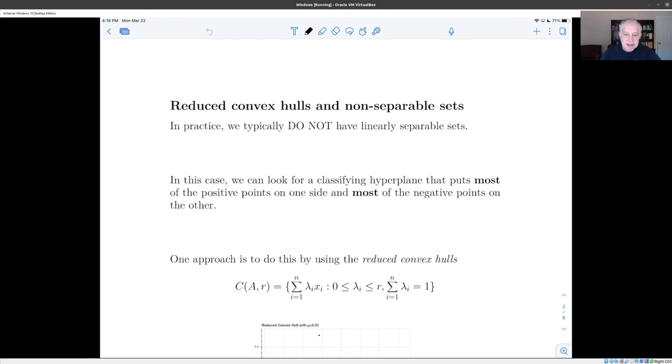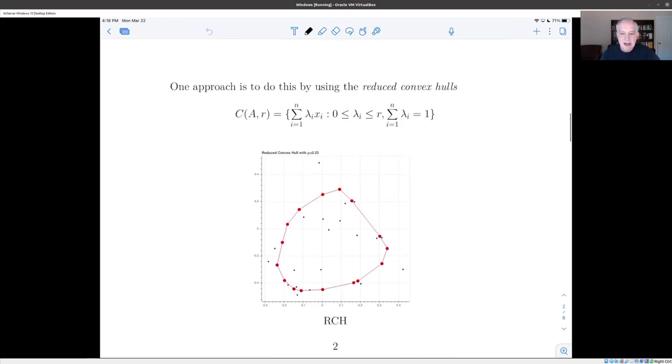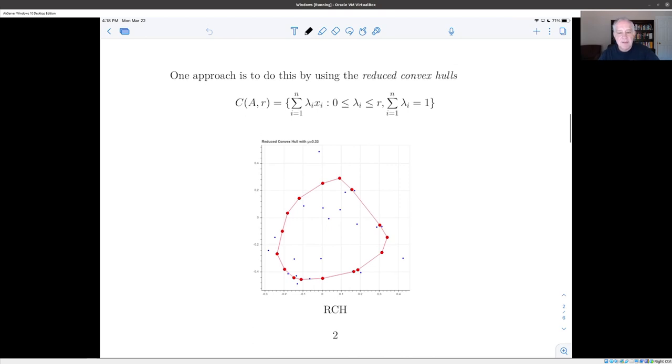And we're going to do this by replacing the idea of the convex hull with the idea of the reduced convex hull of a set of points. So the reduced convex hull of a set of points is gotten by taking all of the combinations, sum lambda i, xi of those points, where the weights sum to one, but you've added a condition, not just that they're bigger than or equal to zero, but they're less than or equal to r. And here r is going to be some parameter between zero and one.